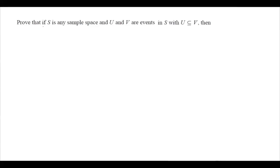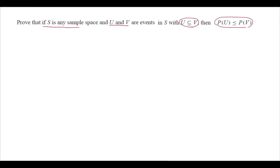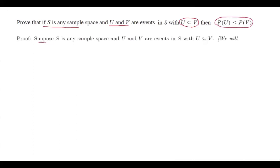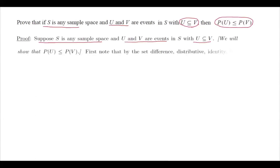Next property. Suppose S is any sample space and U and V are subsets or events in S. Suppose U is included in V, then we can show that the probability of U is less than or equals to the probability of V. These are the assumptions we have: S is a sample space, U and V are events or subsets in S, U is included in V, and we are going to show that probability of U is less than or equals to probability of V.